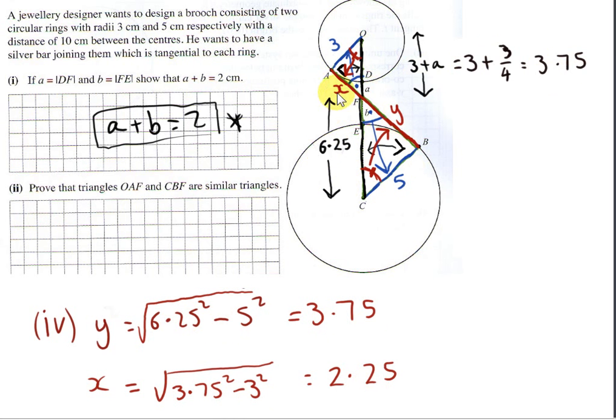Now that we've found X and Y, we can get the distance between A and B, which is the length of the silver bar. So A and B is just the sum of these numbers. So 3 and 2 is 5.75 plus 0.25 is 1, so we get 5 plus 1 is 6. That's in centimeters.